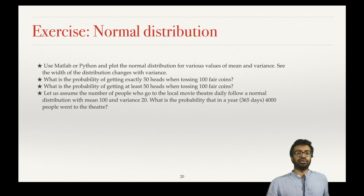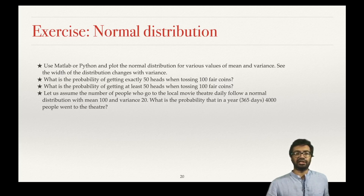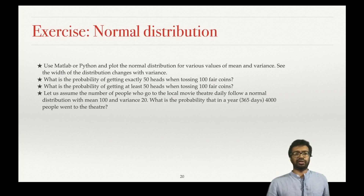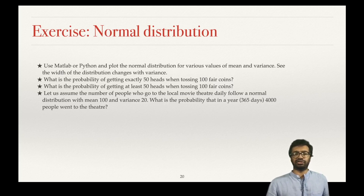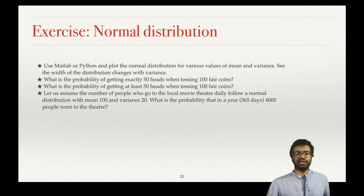Here are some exercises. First, try to plot in MATLAB or Python the normal distributions for various values of mean and variance, and see the width of the distribution changing with variance. Next, calculate by hand what is the probability of getting at least 50 heads when tossing 100 fair coins — use this normal distribution to approximate this value.